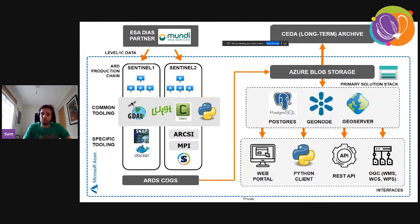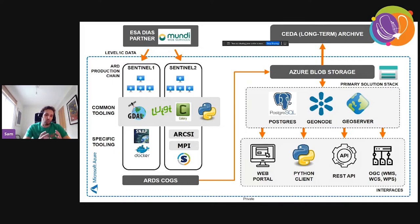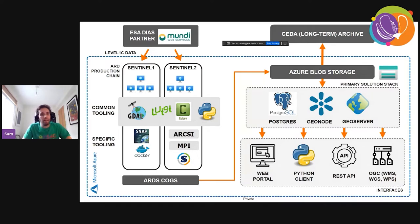For Sentinel-2 processing, we use a tool called ArcC, which came out of that ARD report I referred to. ArcC can use the MPI framework, which allows a manager machine to parallel-process a number of different Sentinel-2 granules in your swath, making use of a cluster of Linux computers. Ultimately, out of this pipeline you get the revised ARD format as a cloud-optimized GeoTIFF, pushed to an Azure storage blob account.